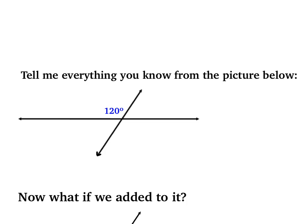Before we do that, let's look at a less complex picture. Here I just have two pairs of intersecting lines with one angle that's 120 degrees. The first approach is to use knowledge about vertical angles. This angle is vertical to — or across from — this one, so that angle also has to be 120 degrees.